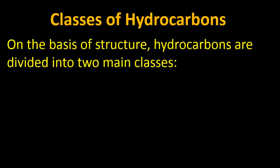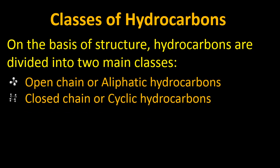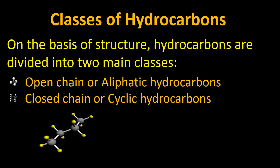In classes of hydrocarbons, on the basis of structure, hydrocarbons are divided into two main classes. The first is open chain or aliphatic hydrocarbons — we can also use the word aliphatic for open chains — and the next is closed chain or cyclic hydrocarbons.